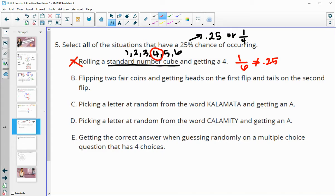Flipping two fair coins and getting heads on the first flip and tails on the second flip. So remember, with two coins, you can get head-head for both, you could get a heads and a tails, you could get a tails on the first and a heads on the second, or you could get a tails on both of them. So what's the probability that it's heads on the first and tails on the second? So head first, tail second, this one out of the four chances. So that is a 25% chance.